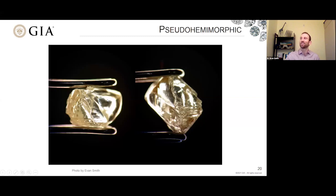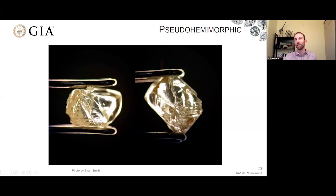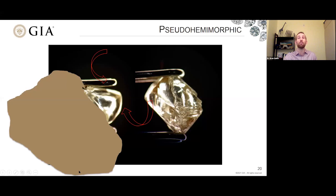Here's an interesting diamond — it's sort of half octahedron on one side and half dodecahedron on the other. You can see it's rounded and dissolved on one side and sharp, still maintaining its octahedral shape on the other. This is called a pseudo hemimorphic crystal, meaning it's different on either side. The 'pseudo' part means it hasn't grown into this lopsided shape — it's actually been dissolved into it. Part of this diamond was protected because it was embedded inside a rock on its way up to the surface, so only part of it was etched or resorbed by fluids.